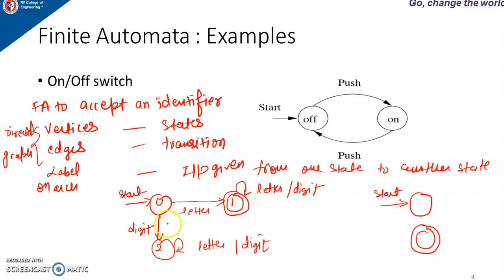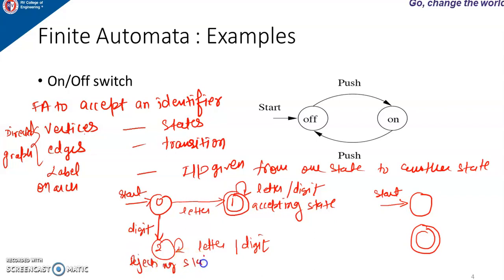In state 0, if the first input is a digit, the symbol is invalid and the machine enters into state 2, which is the rejecting state. This is the accepting state and this is the rejecting state. Once the machine enters into the rejecting state, the input string should be rejected and the machine stays in state 2. How to design it will be discussed later.